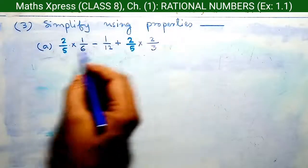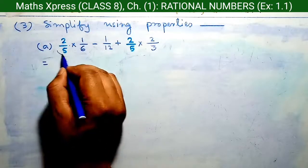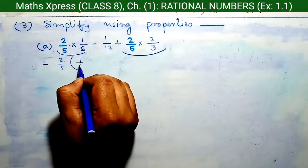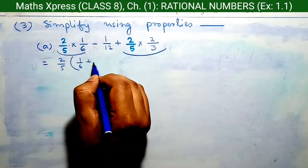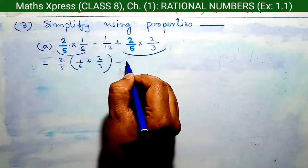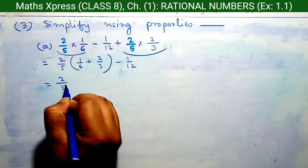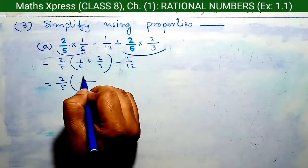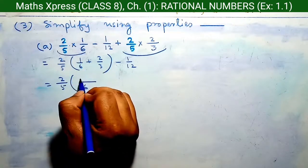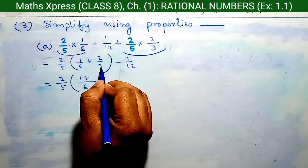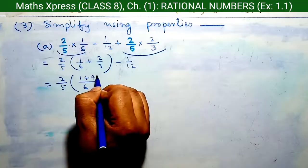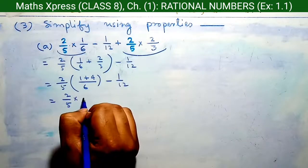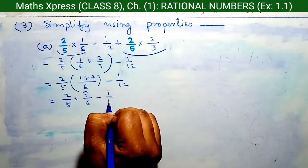Question 3: Simplify using properties. According to the distributive property, from both parts we take 2 by 5 as a common factor. Therefore, we have 2 by 5 into 1 by 6 plus 2 by 3 minus 1 by 12. Now finding the LCM of 6 and 3, which equals 6. So 1 into 1 equals 1, plus 2 into 2 equals 4, giving us 5 by 6 minus 1 by 12.